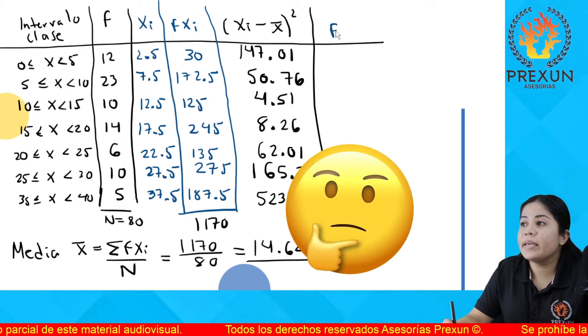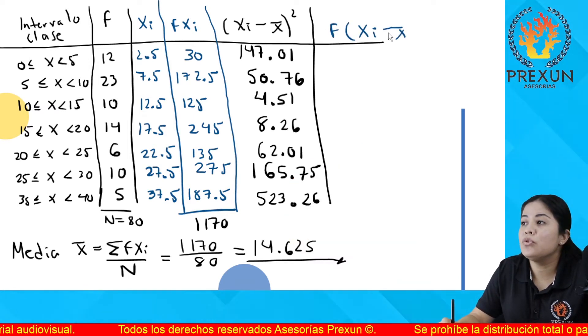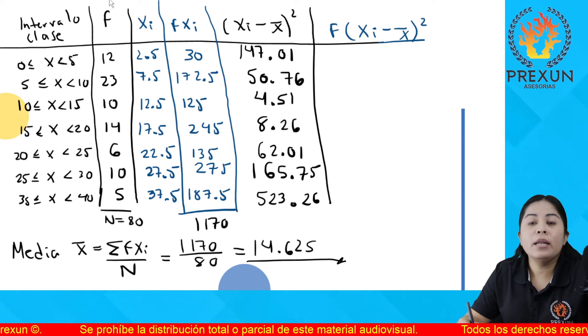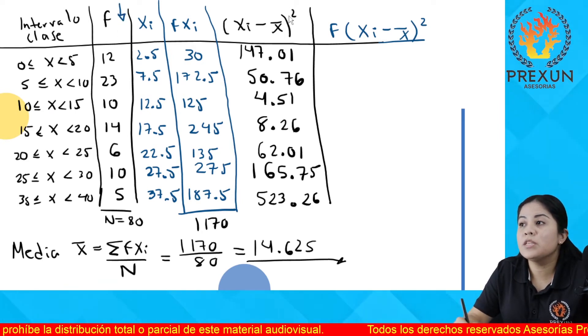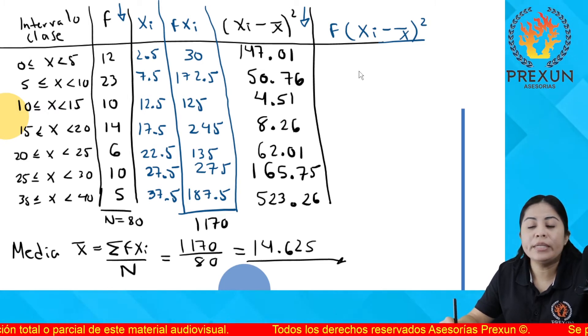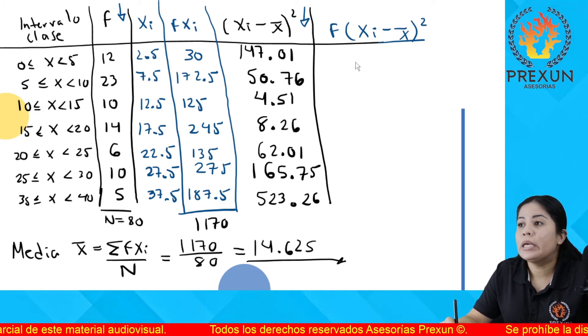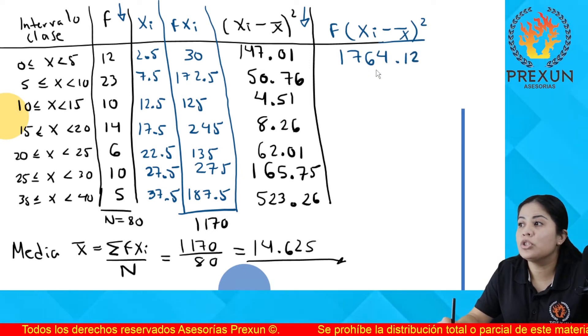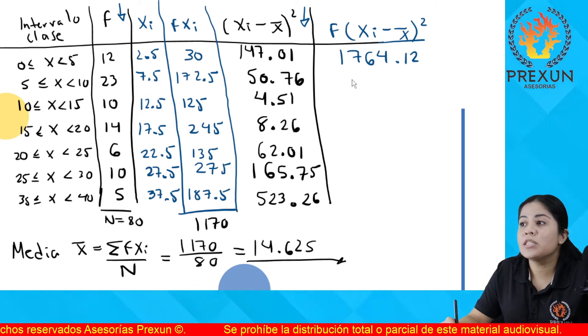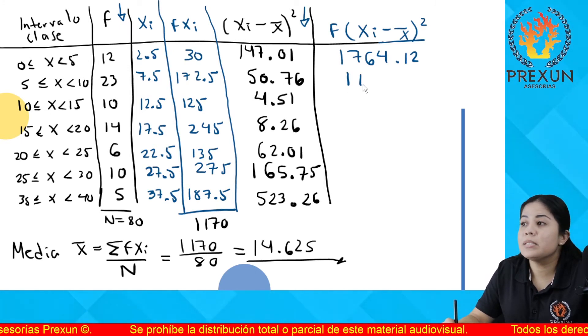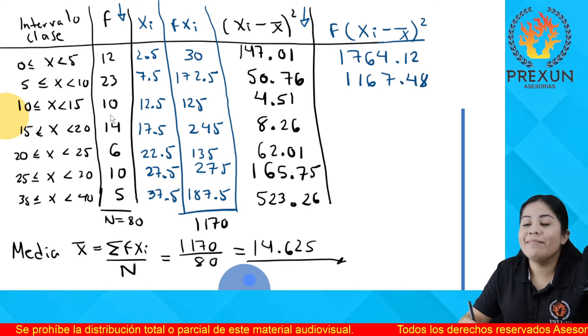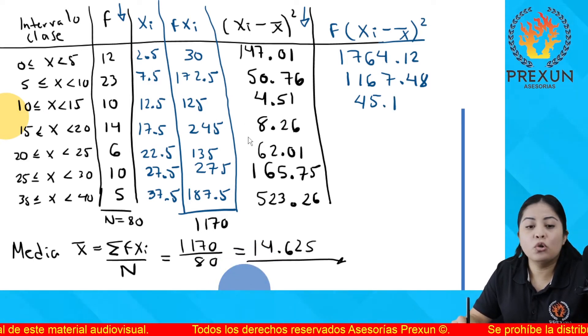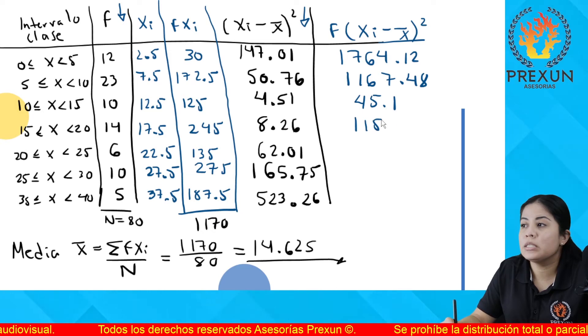Ahora, la otra columna que voy a agregar es f por x sub i menos la media al cuadrado. Podemos observar que vamos a multiplicar la segunda columna, que es las frecuencias, por la penúltima columna que obtuvimos ahorita. Es 12 por 147.01 es 1764.12. La que sigue es 23 por 50.76 es 1167.48.